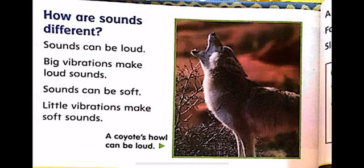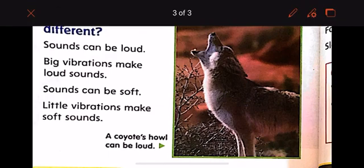How are sounds different? Of course, we have different kinds of sounds. Sounds can be loud, like a coyote, or like a lion — the roar of the lion is very loud. Big vibrations make loud sounds. What about the cat? A cat goes meow — is it loud vibration or little vibration? The cat's vibration is little, so it sounds soft. It's not loud. The cat's meow sounds soft and makes little vibration.